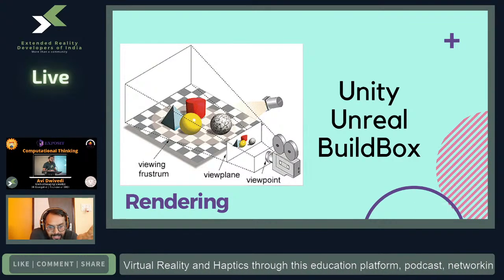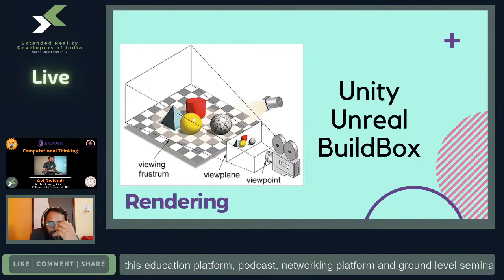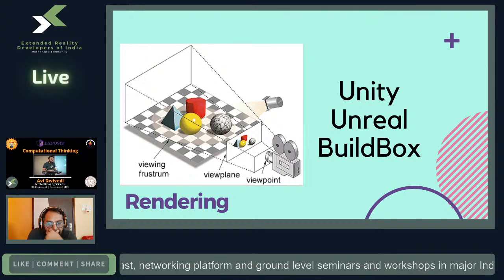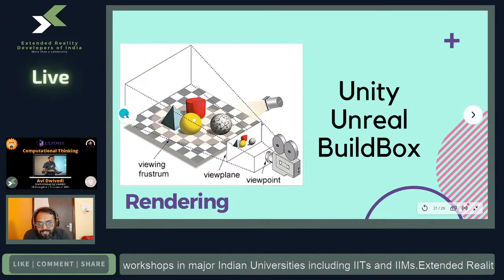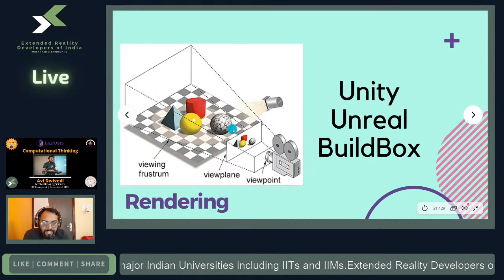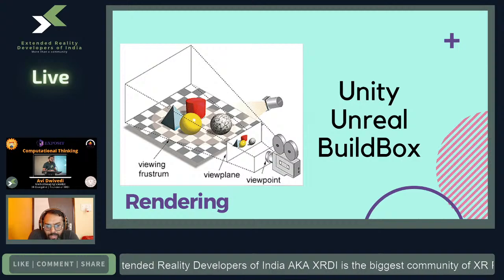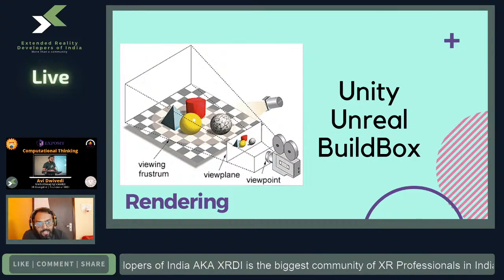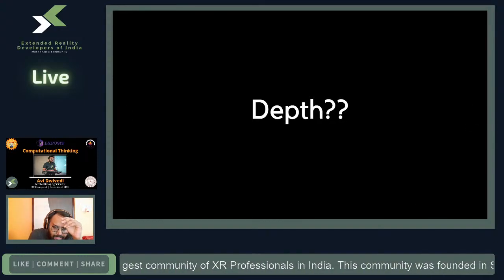There are also engineering tools — Unity, Unreal, and BuildBox — which are physics and rendering engines. You import the artist's 3D objects into these tools, and they let you move objects in a physically correct and visually convincing way. These are physics and rendering engines used in game development and XR applications.